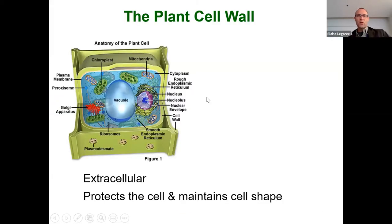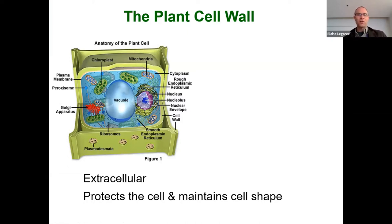Let's talk about the plant cell wall. First thing I want to point out is that the plant cell wall is not green — what's green in the plant cell is the chloroplast. Plant cell walls are actually usually kind of more white. Think of something like cotton. That's what a plant cell wall is made out of — basically cellulose, which is the same thing cotton is made of.